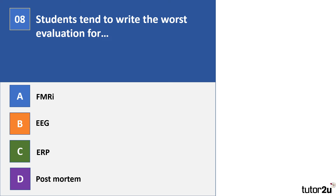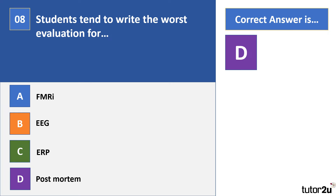Question eight. Students tend to write the worst evaluations for: A: fMRI; B: EEG; C: ERP; D: postmortem. The correct answer is D. Postmortem has been flagged by examiners because students' evaluations tend to be very anecdotal — going little beyond saying the person can't give consent because they're dead. For fMRI, EEG, or ERP, students write much stronger evaluations comparing temporal resolution and spatial resolution. So think carefully about your postmortem evaluation and go beyond the issue of consent.